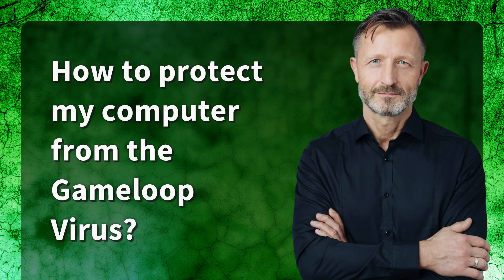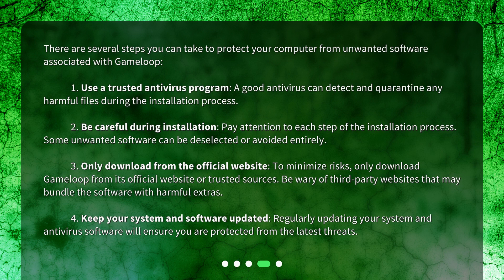How to protect my computer from the game loop virus. There are several steps you can take to protect your computer from unwanted software associated with Game Loop. 1. Use a trusted antivirus program — a good antivirus can detect and quarantine any harmful files during the installation process. 2. Be careful during installation — pay attention to each step, as some unwanted software can be deselected or avoided entirely. 3. Only download from the official website — to minimize risks, only download Game Loop from its official website or trusted sources, and be wary of third-party websites that may bundle the software with harmful extras. 4. Keep your system and software updated — regularly updating your system and antivirus software will ensure you are protected from the latest threats.